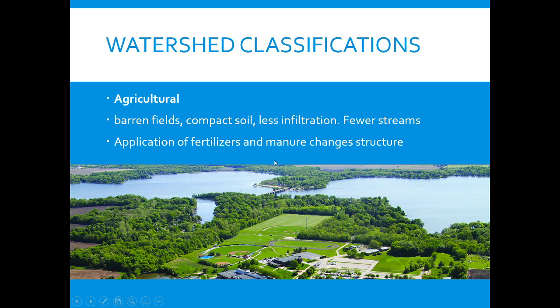Now let's look at the types of watersheds. The first one is agricultural. These are barren fields where the soil is very compacted, so there's not as much infiltration and not as many streams. Typically we apply fertilizers and manure, which can change the structure of the watershed itself.